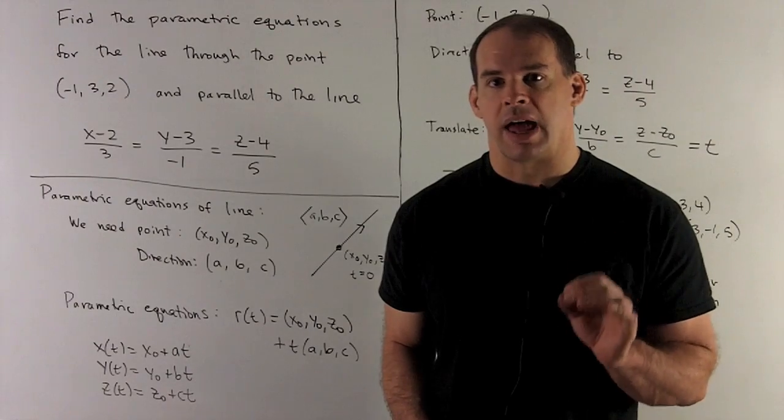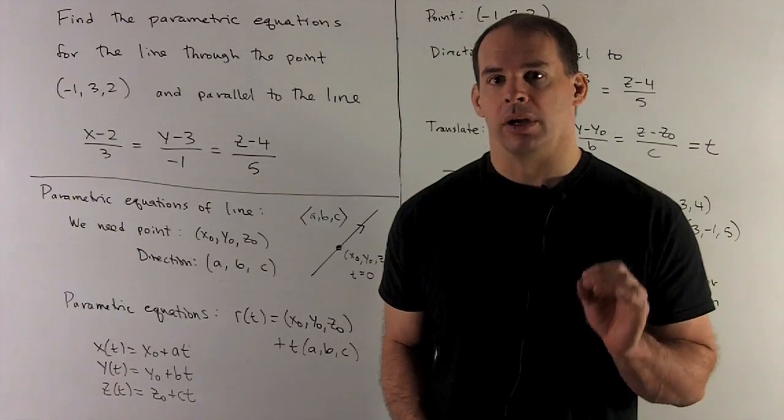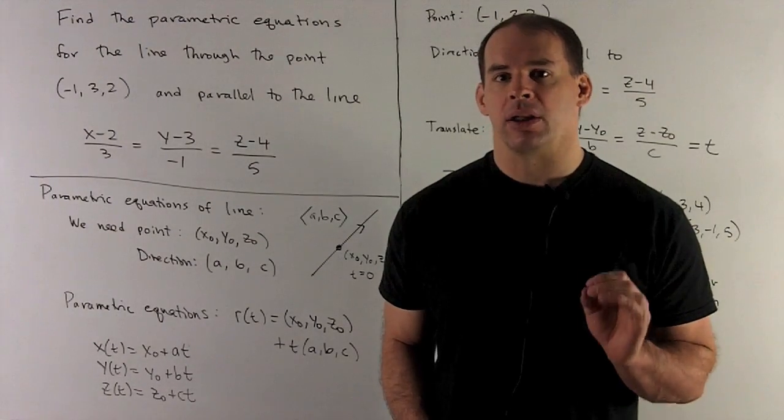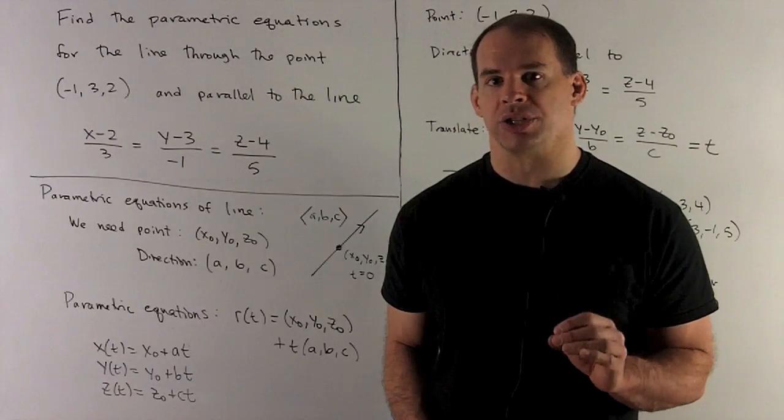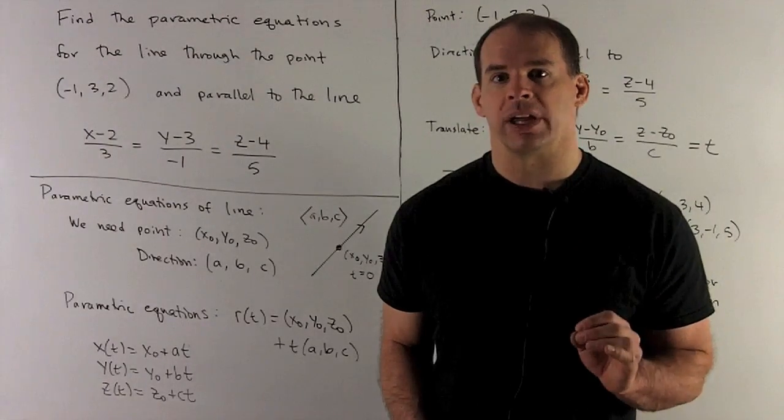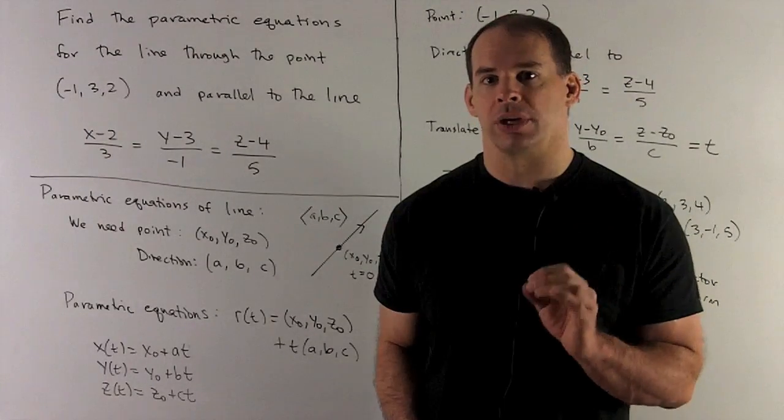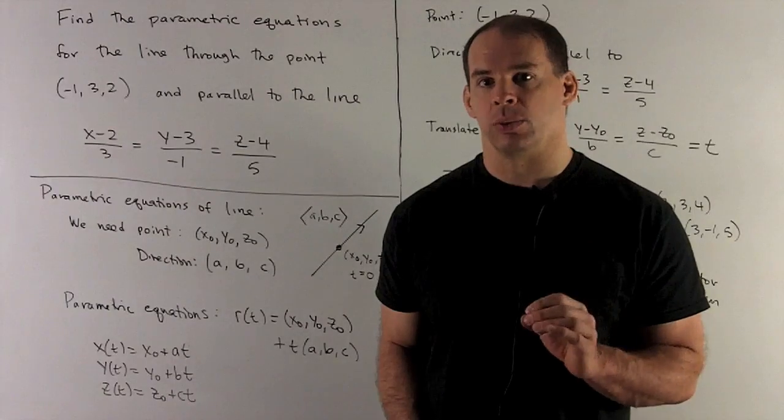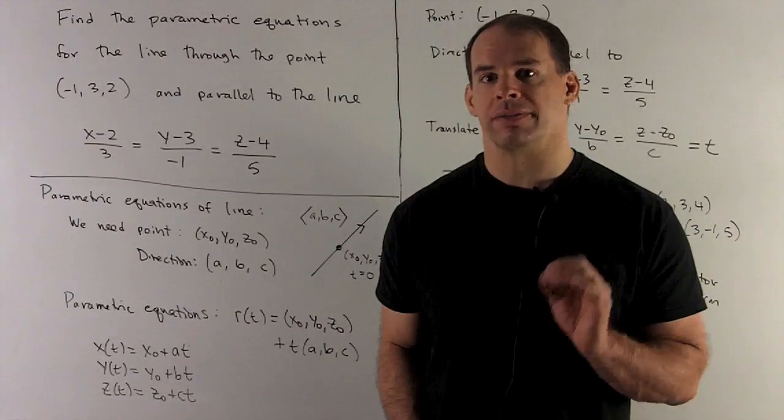Find the parametric equations for the line through the point (-1, 3, 2) parallel to the line with symmetric equations x minus 2 over 3 equals y minus 3 over minus 1 equals z minus 4 over 5.